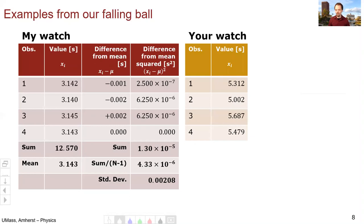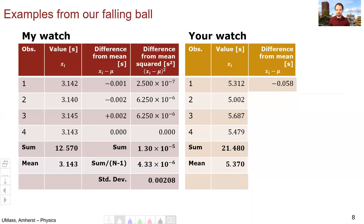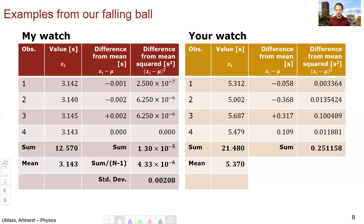Let's repeat using your watch, which you'll recall had a larger spread. Once again, we need to calculate the mean, which we know how to do. Add them all up and divide by four. Then we go point by point and subtract from the mean. So 5.312 minus 5.370 is minus 0.058. Repeat that for all the data points. Take each answer and square it. So minus 0.058 squared is 0.003364. Repeat that for all the numbers. Add them all up like that. Divide by n minus one. Again, in this case three, take a square root and we get a standard deviation of 0.289.